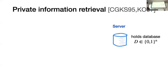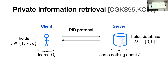To begin, let me explain the private information retrieval problem. In this problem, we have a server that holds an N-bit database, and we have a client that holds some index I between one and N. What our client wants to do is to privately read the I-th database bit. It can do so if it interacts with the server following a private information retrieval, or PIR, protocol. At the conclusion of this protocol, our client is going to learn exactly the I-th database bit, while our server is going to learn nothing about the index I that the client is reading.